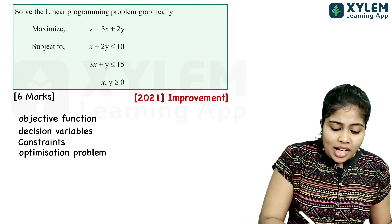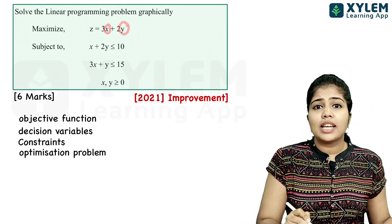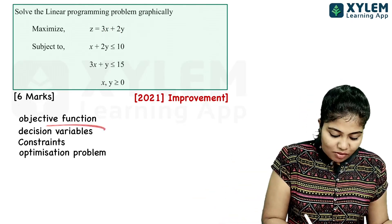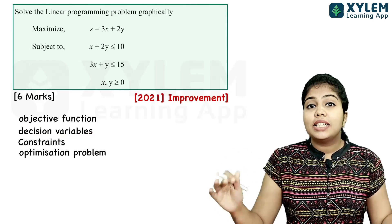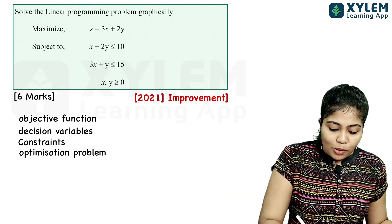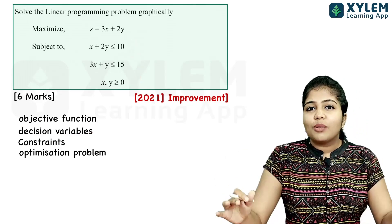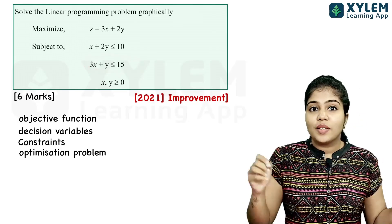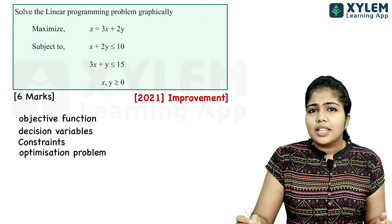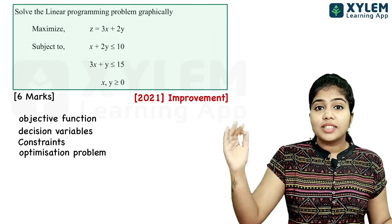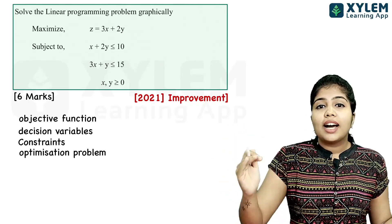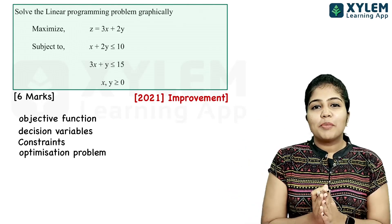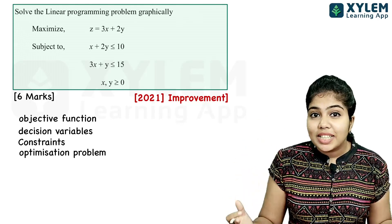In the objective function, x and y are the variables — we have two decision variables, x and y. The inequalities x plus 2y less than or equal to 10, 3x plus y less than or equal to 15, and x, y greater than or equal to 0, are called linear constraints.